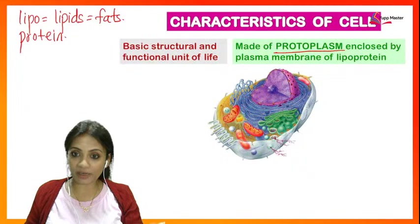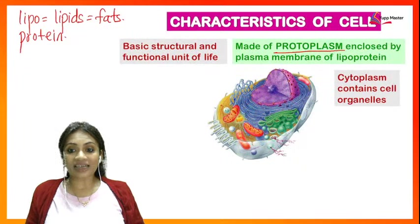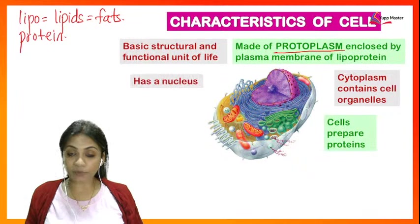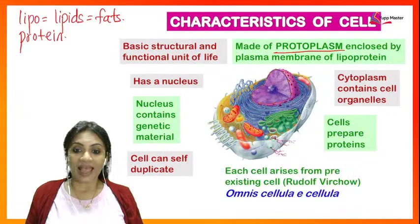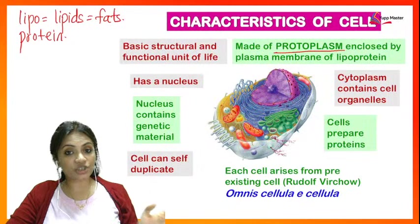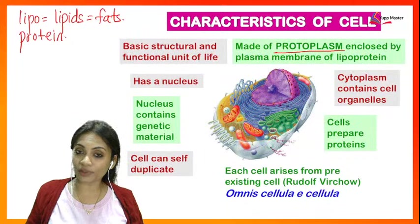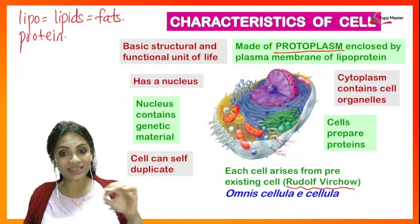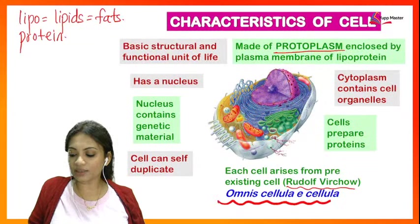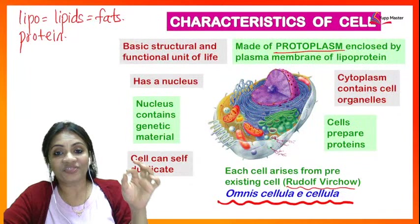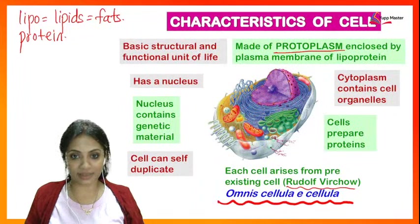Cells can self-duplicate, and each cell arises from a pre-existing cell — as stated by Rudolf Virchow. This statement is also called 'omnis cellula e cellula,' which means that each cell arises from a pre-existing cell.